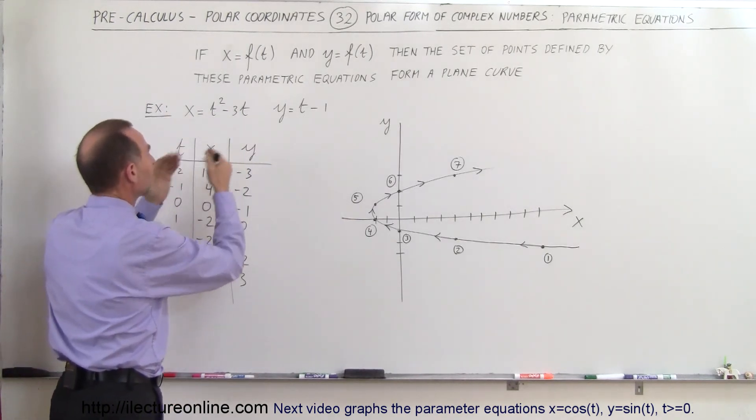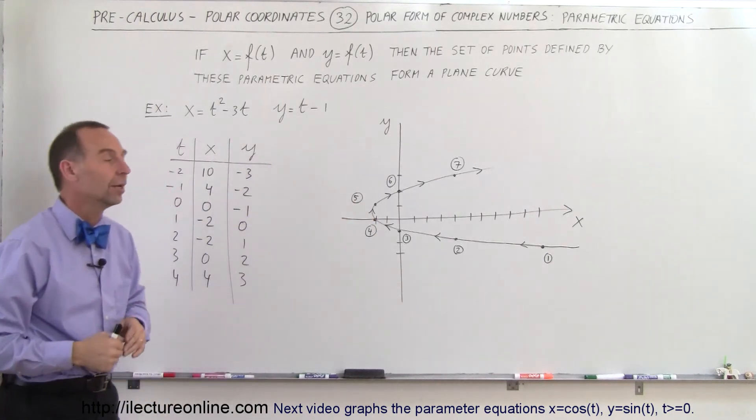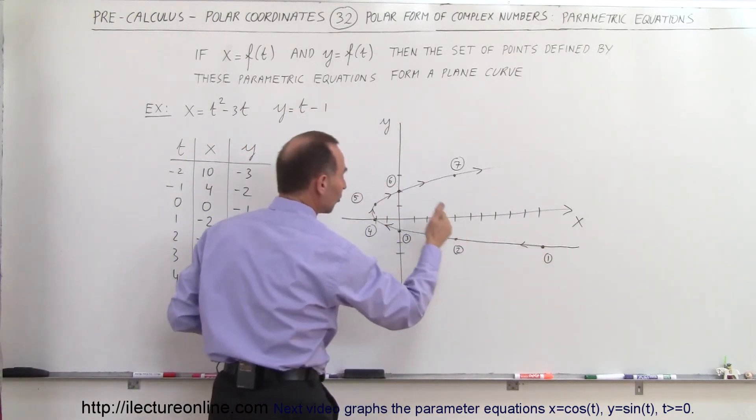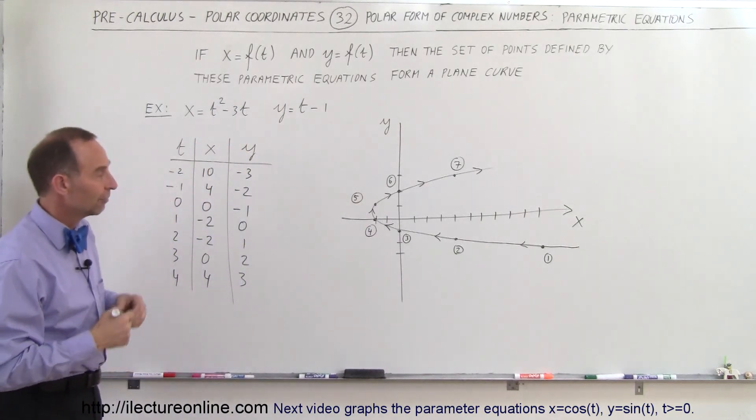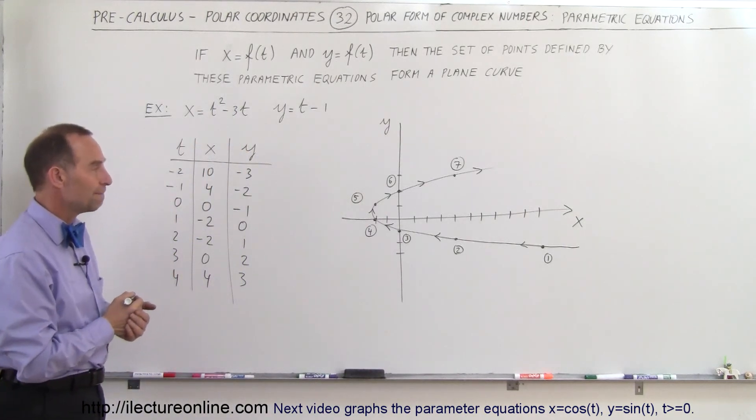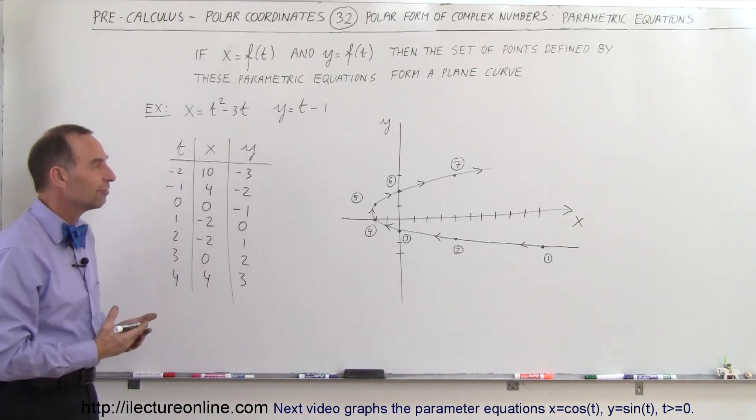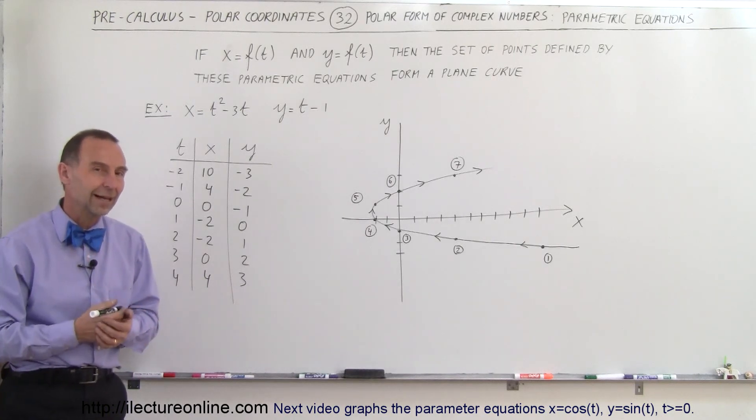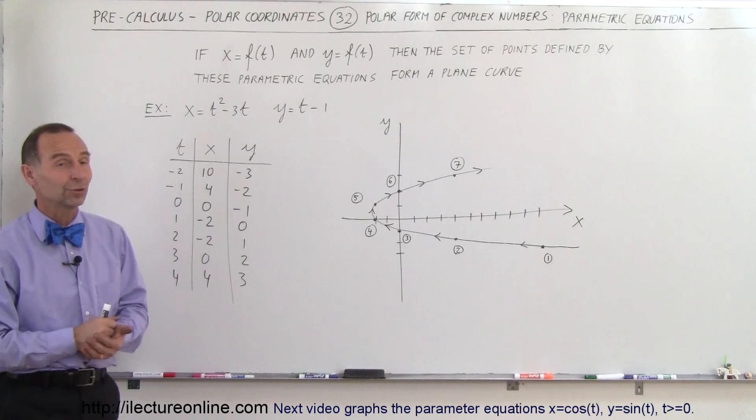We plug in values for t, we get values for x and y. When we plot those out, we then get a story, basically a chronological position of where the particle will be at various points in time equal to t. And so that's a nice example. We'll show you a few more examples to get this solidified on how to work with parametric equations. And also, of course, we'll tie that in with what we mean with polar coordinates as well.